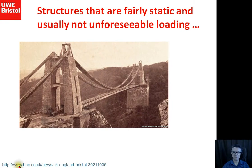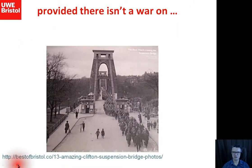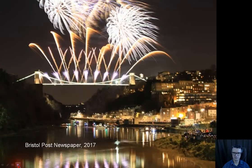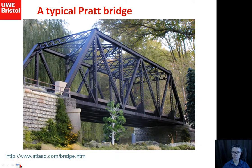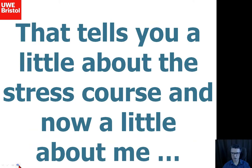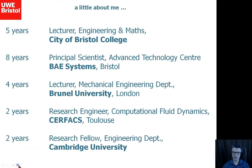We'll be looking mainly at bridges. This is the Clifton Suspension Bridge — shown being constructed, with soldiers marching to Avonmouth, and New Year's celebrations with fireworks — referenced from the BBC website and the Bristol Post newspaper. We'll be analysing beam bridges — a straight beam going across — and also framework bridges such as truss bridges; this is an example of a Pratt bridge.